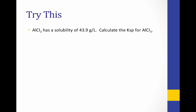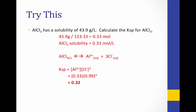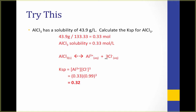Here is a problem to try on your own. There are two tricks: first, you are given grams per liter instead of moles per liter, so you need to start by converting grams to moles. Also notice that the salt is AlCl₃, meaning the ratio of dissolved ions will not be one-to-one. Pause the video and try this problem. Once you convert grams per liter into moles per liter, you must account for the 3-to-1 ratio between chloride and aluminum. The chloride concentration will be 3 times that of aluminum, since for every 0.33 moles of AlCl₃ that dissolves, we get 0.33 moles of Al³⁺ but 3 times as many moles of Cl⁻.